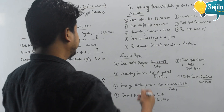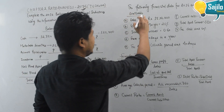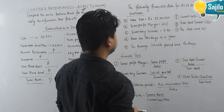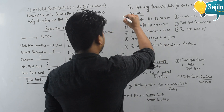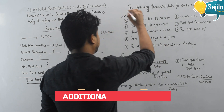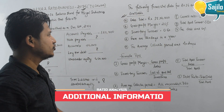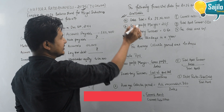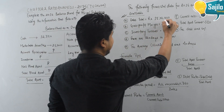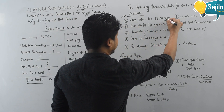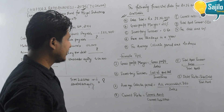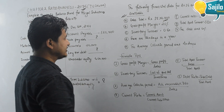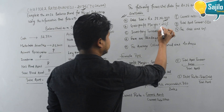The following financial data and additional information is also available. The total sales is $18,00,00,000. The gross profit margin is 25%.